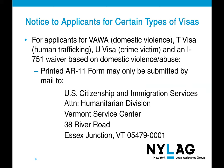If you are an applicant for a certain type of visa — for example, VAWA based on domestic violence, a T visa based on human trafficking, a U visa as a crime victim, or an I-751 waiver based on domestic violence or abuse — you will want to print the AR-11 form and mail it to a specific address. This would be the only way you can change your address in those cases.